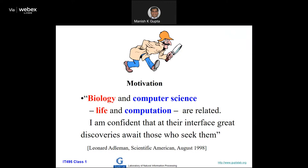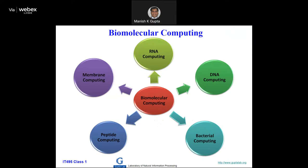If you don't believe me, look at any of your technical heroes — like Steve Jobs or Elon Musk. All these people are saying that biology is very important, because the kind of things that are possible you have never thought of earlier. At the intersection of computer science and biology, an area known as biomolecular computing has emerged. We can divide it into five branches: RNA computing, DNA computing, bacterial computing, peptide computing, and membrane computing. Peptide computing is protein-based.